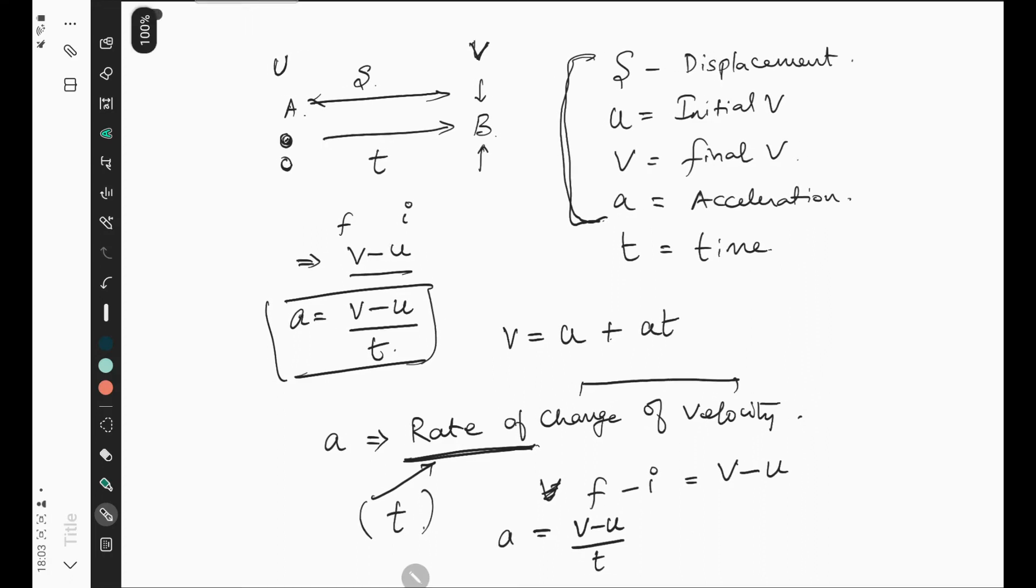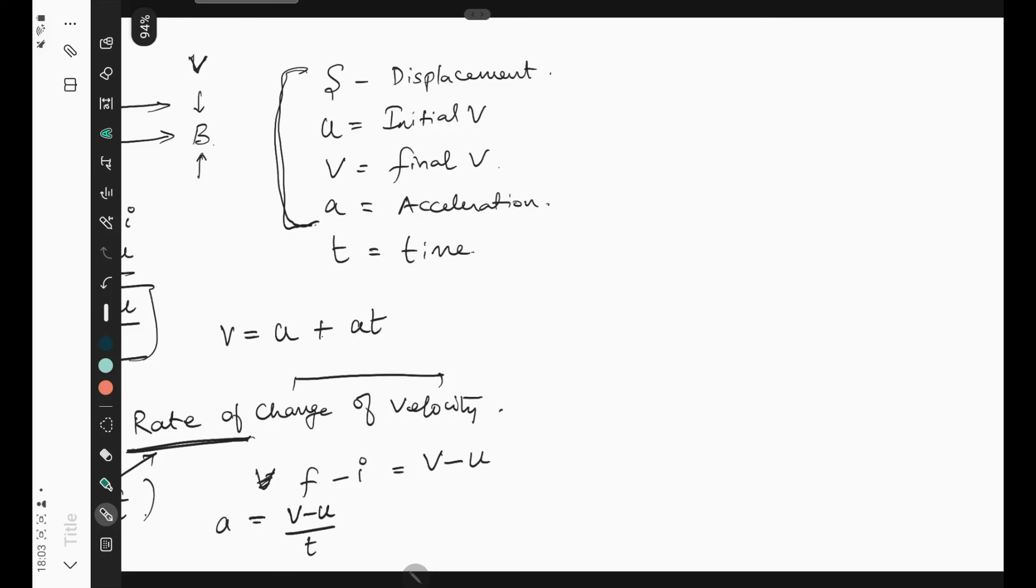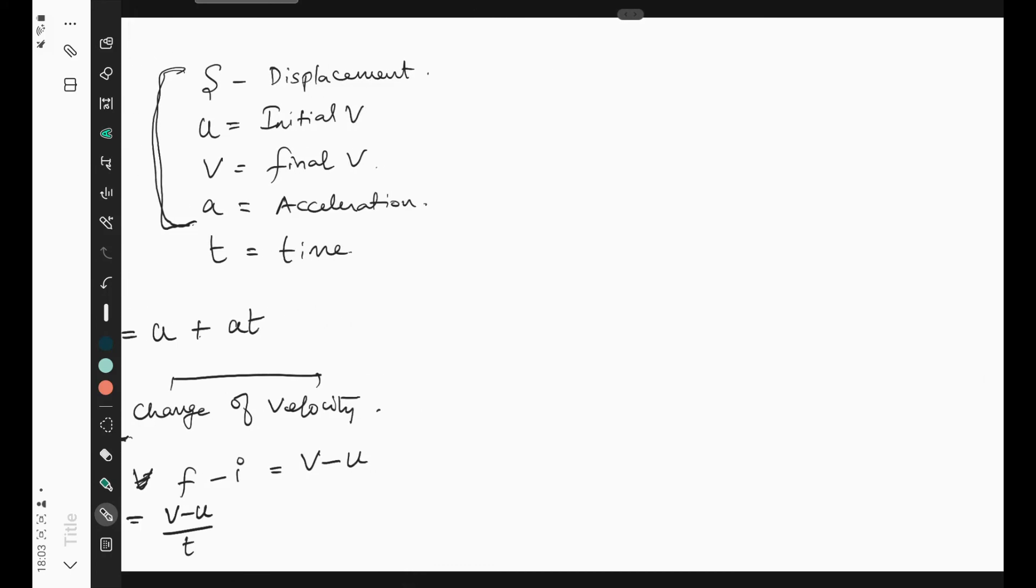Rearrange this and we will end up with a times t equals v minus u. We can move the u from here to the other side, so v equals u plus at. This is the first law of motion.